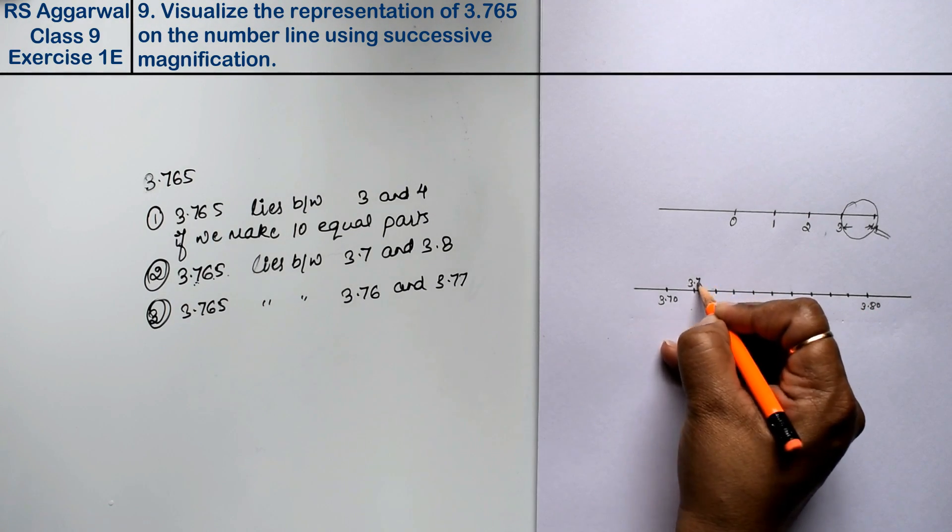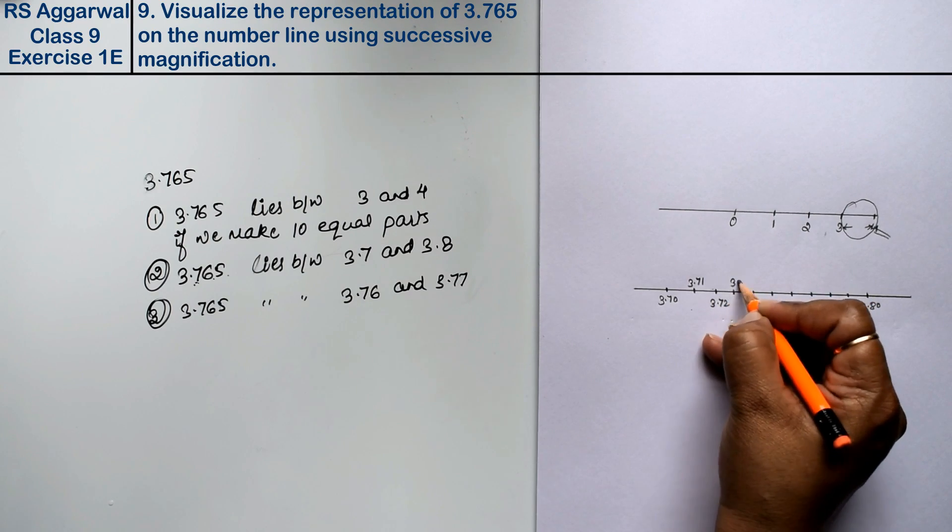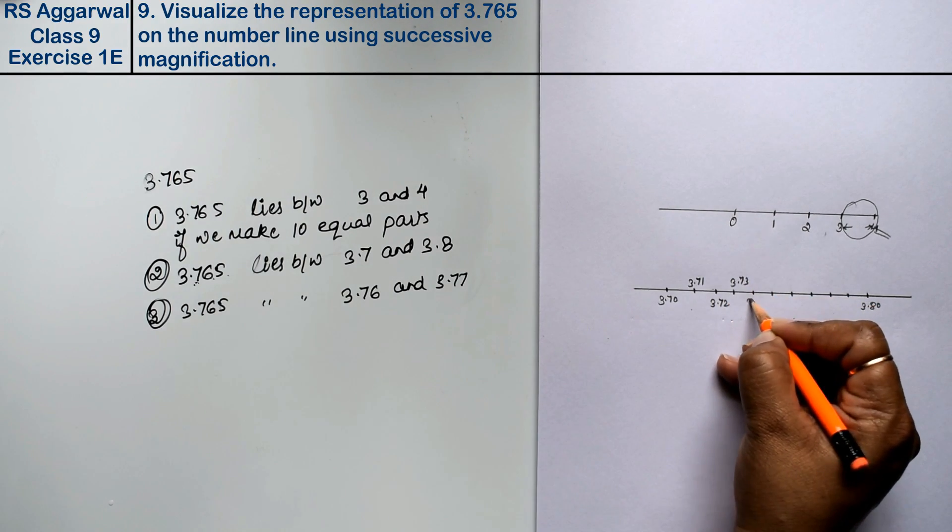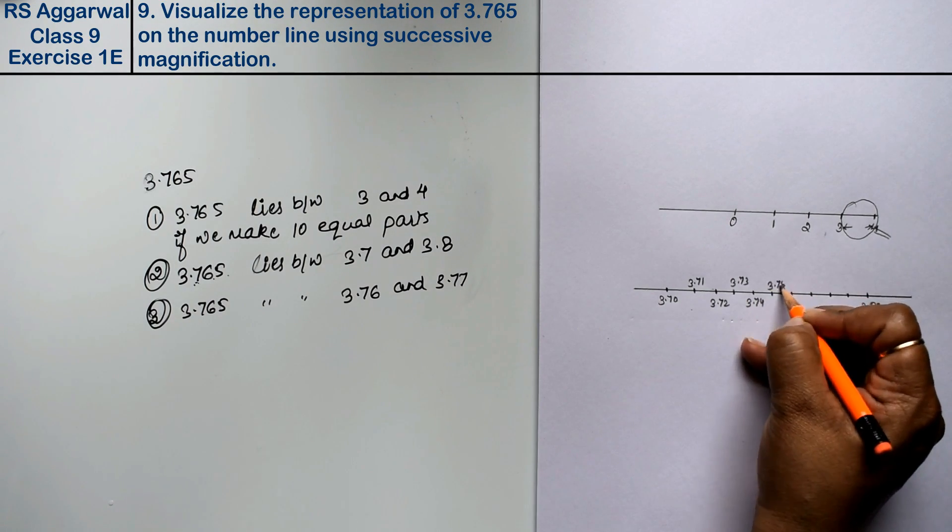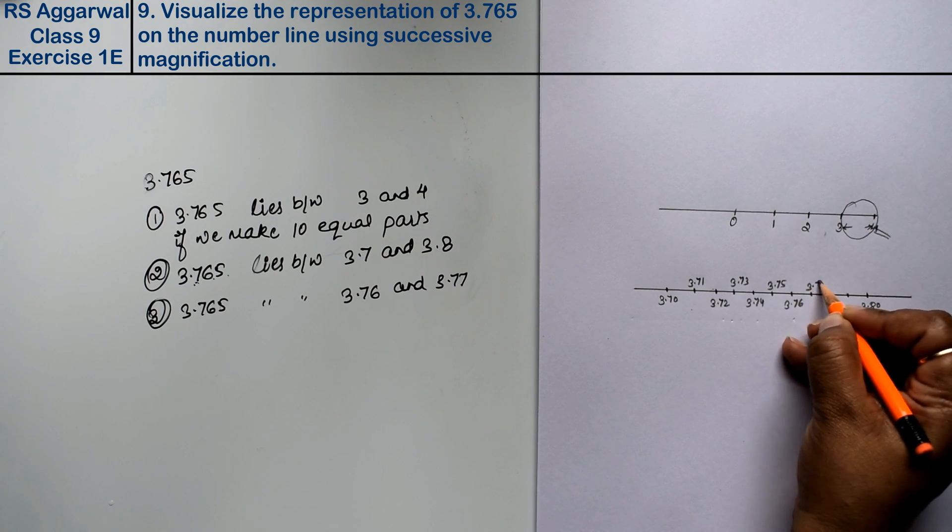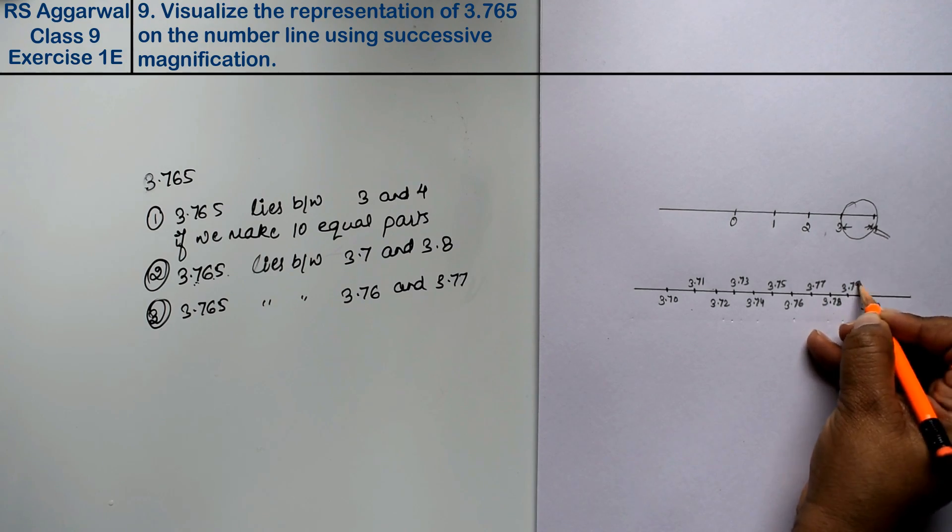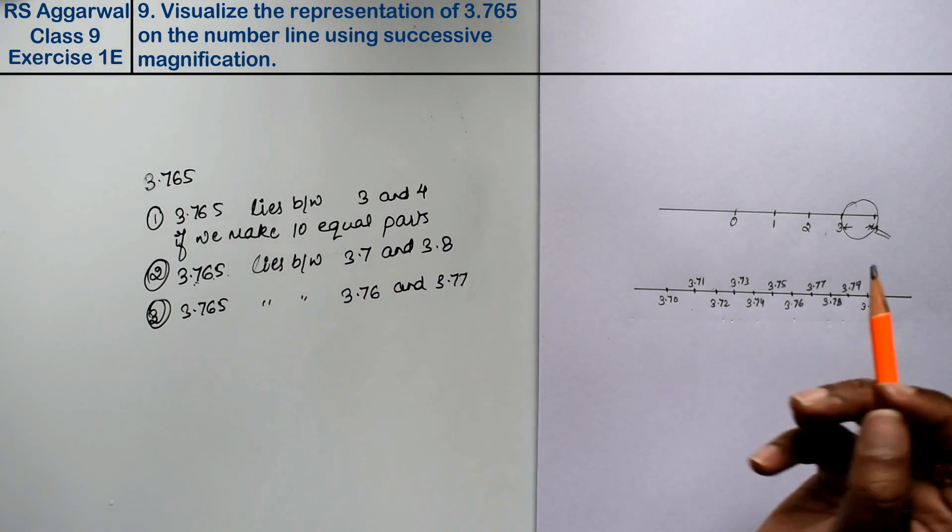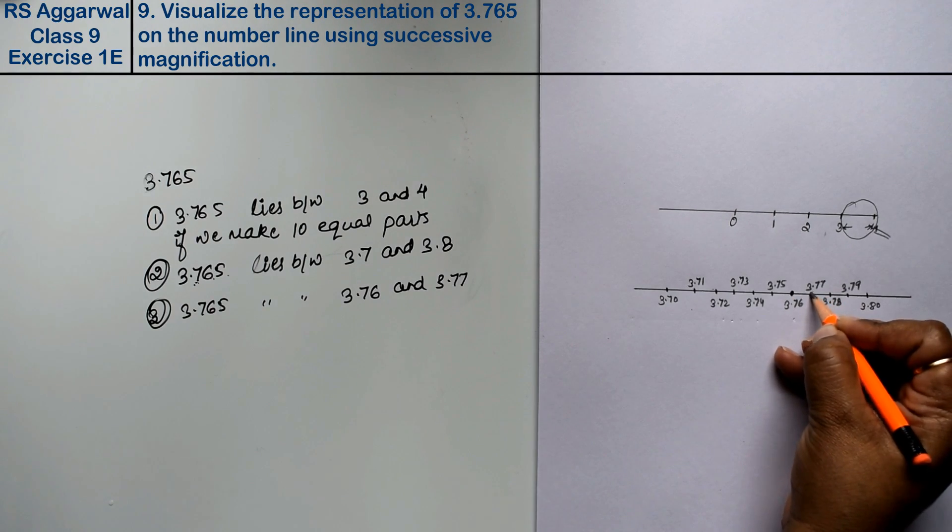So it is 3.71, 3.72, 3.73, 3.74, 3.75, 3.76, 3.77, 3.78, 3.79. And this number is 3.76, so it will be placed here between them.